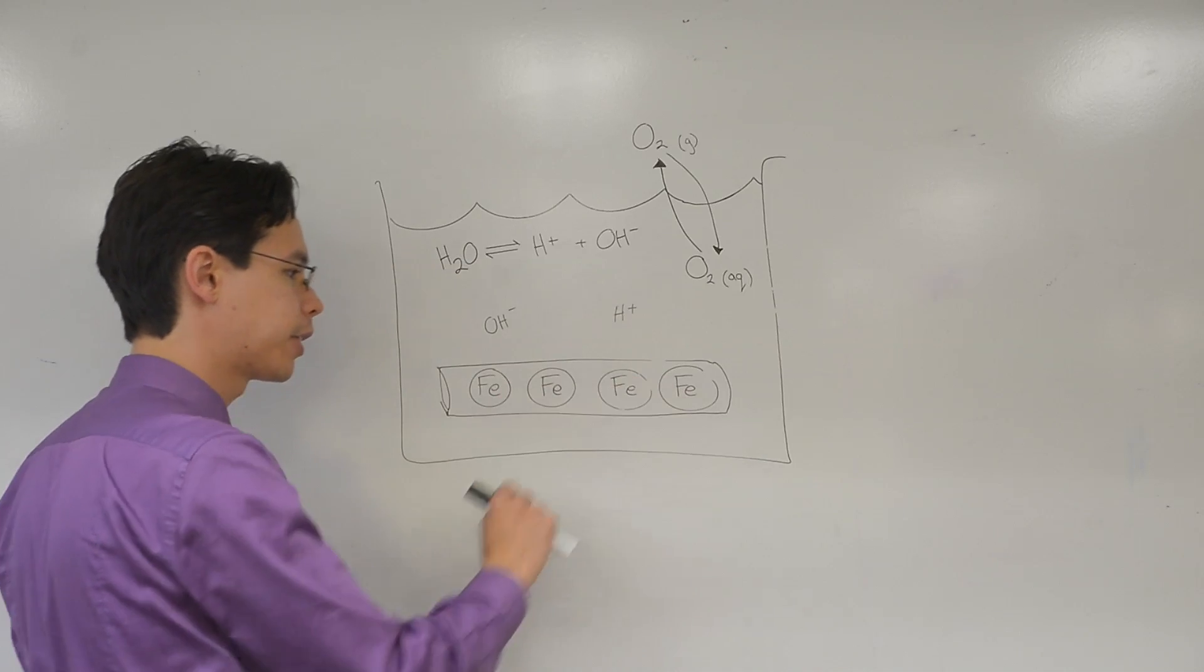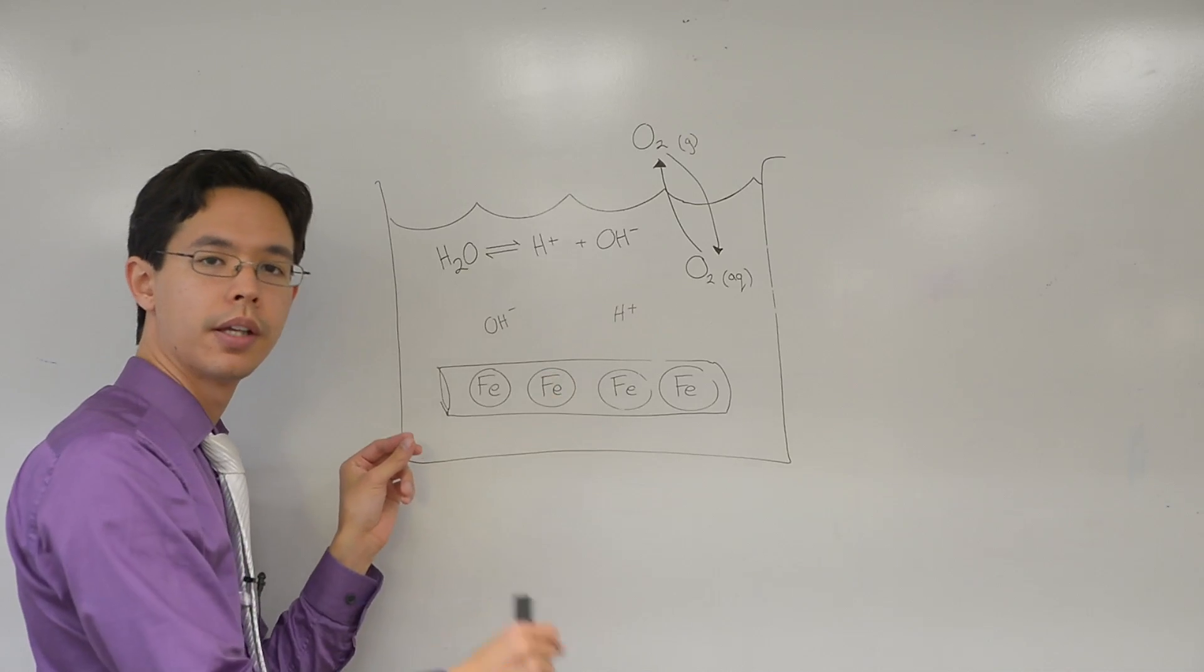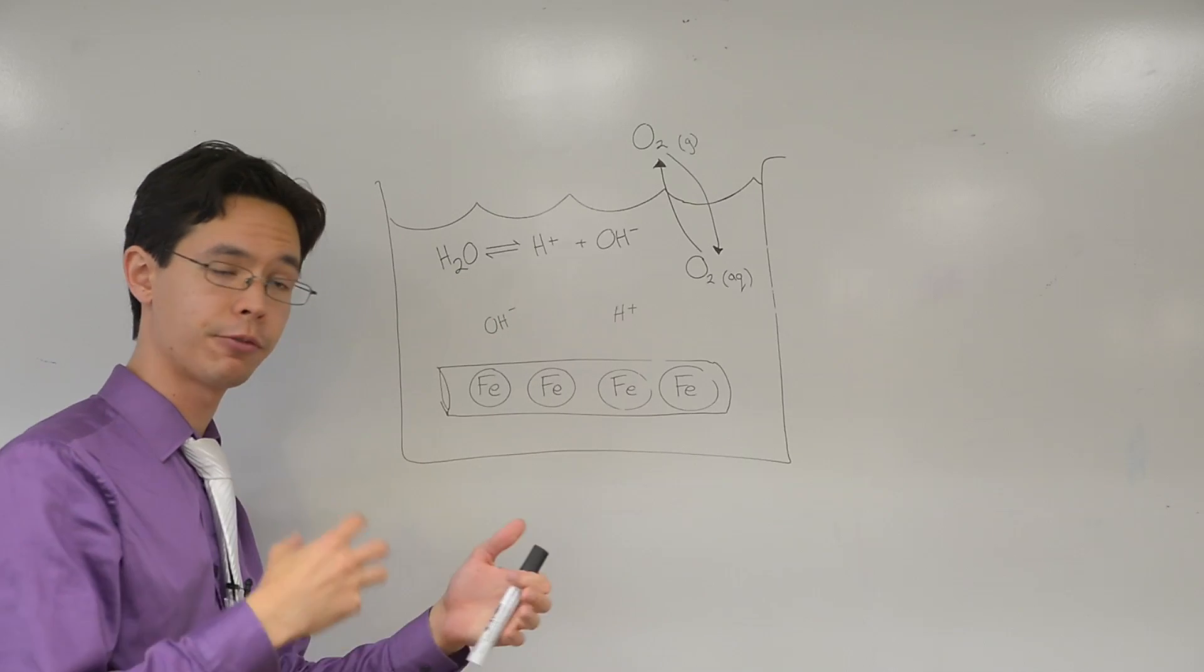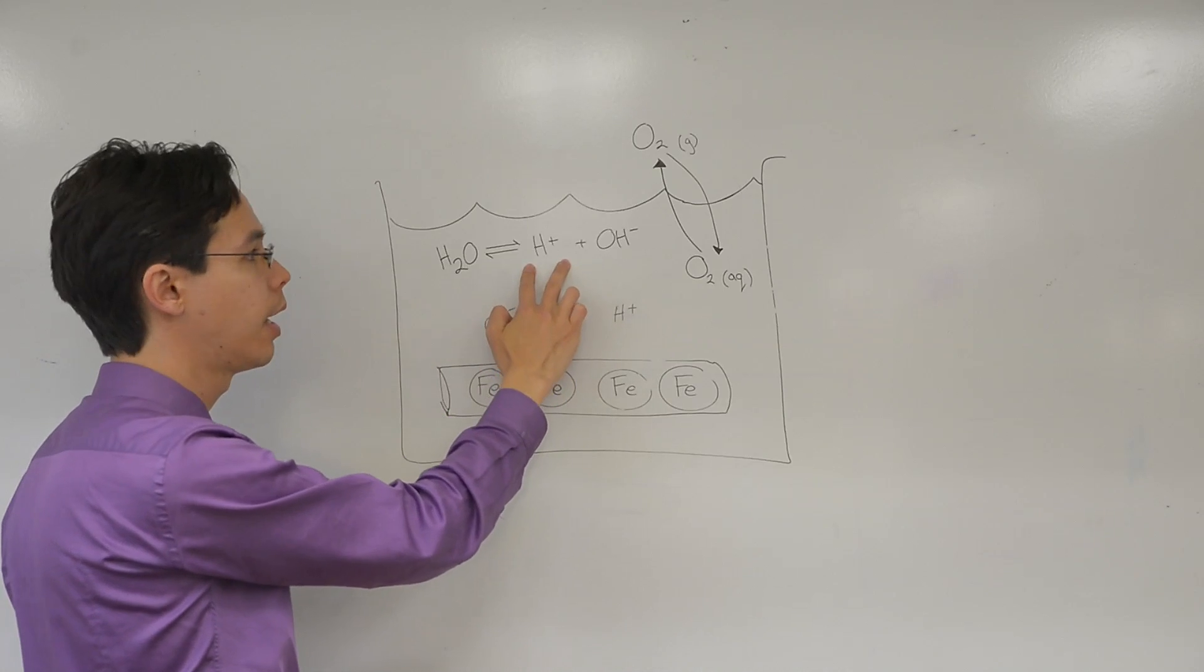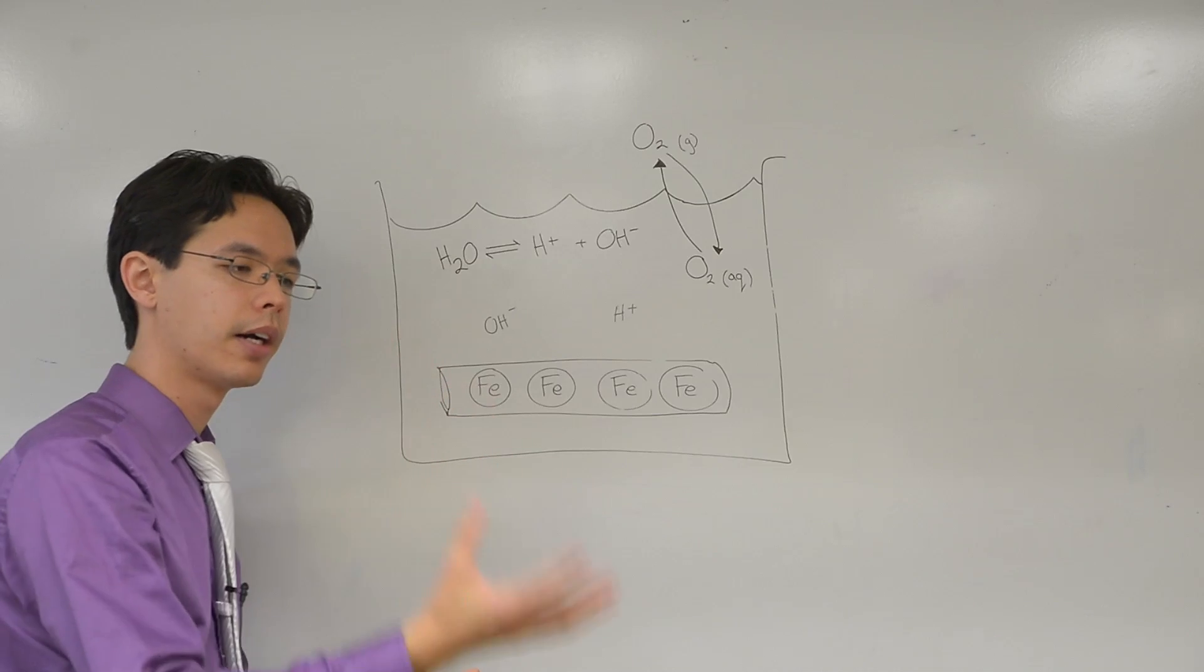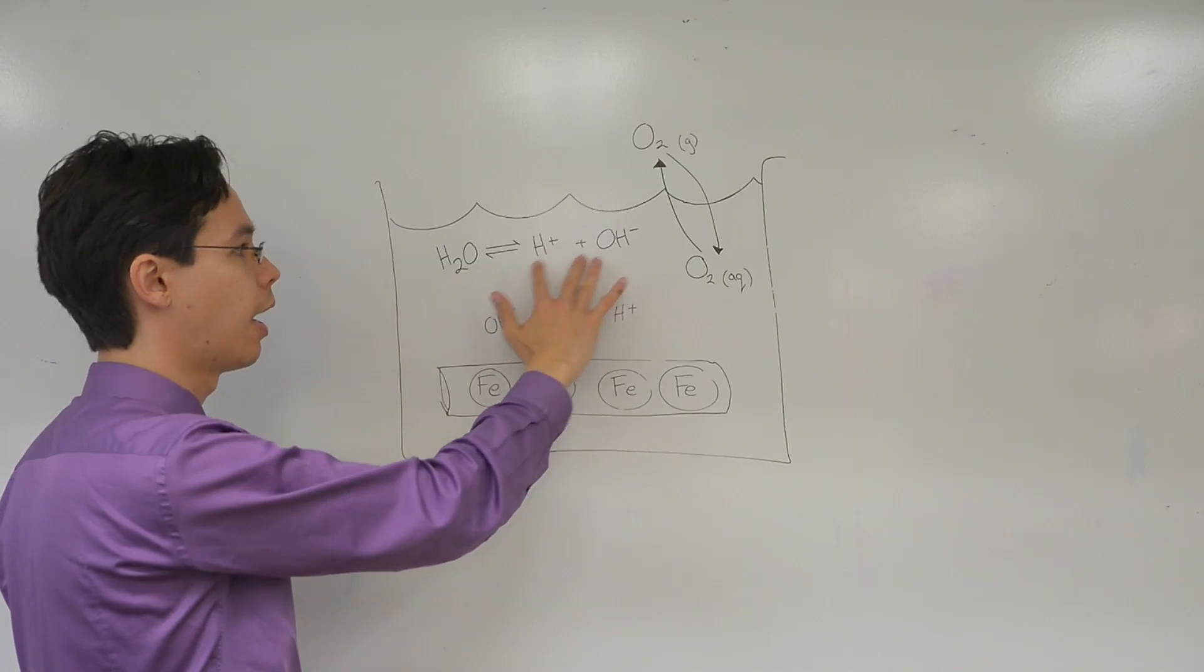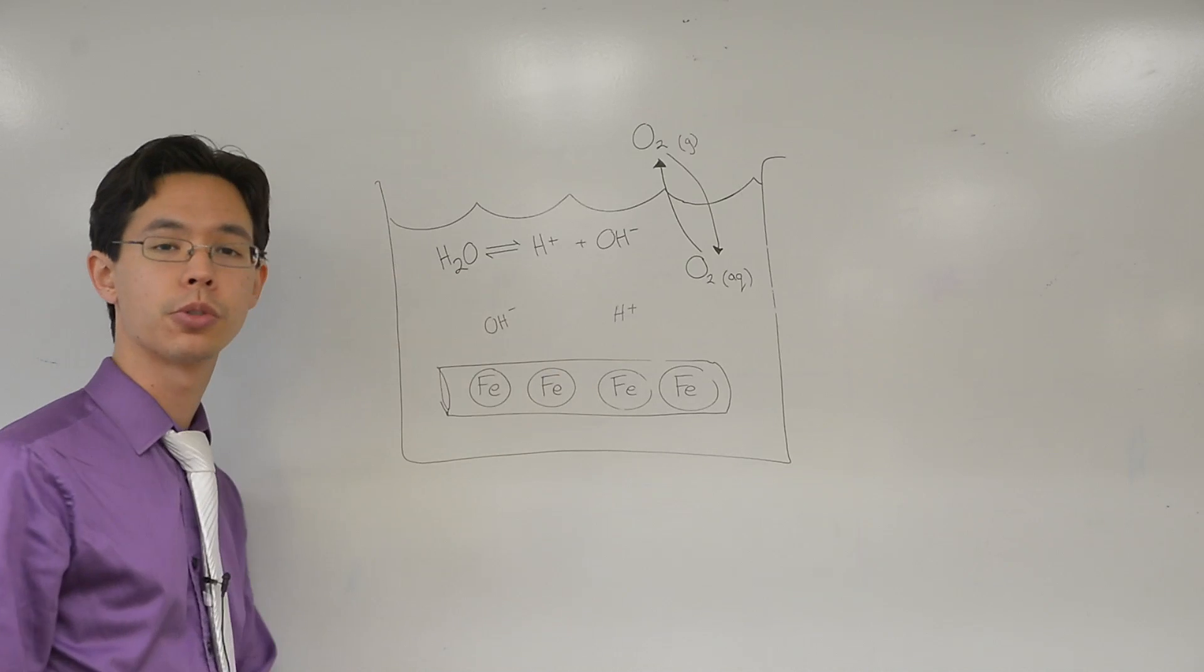I've got these iron atoms arranged in a cylinder to represent the wires that are in the steel wool, and I've got my water here. Water self-ionizes, meaning it forms ions. It can separate into a hydrogen ion and a hydroxide ion. The thing is that water does not do this very much. Only a small amount of the water will actually ionize. Most of the time it'll live as a H2O molecule.